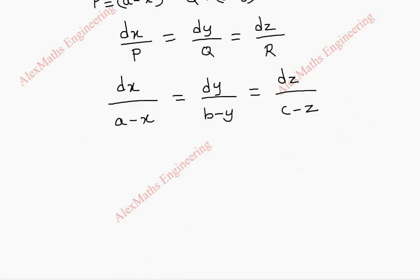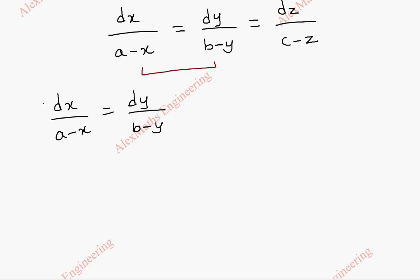Taking first two terms, we have dx by A minus X equal to dy by B minus Y. This is in the form of variable separable. X terms on one side, y terms on the other side. We can go for integration.